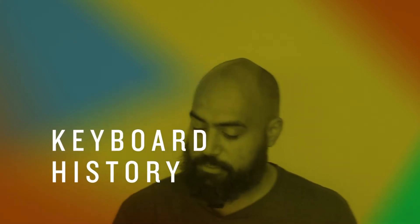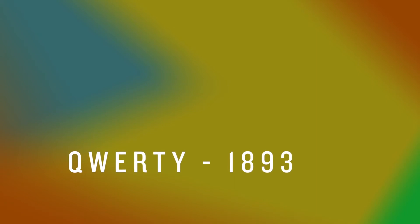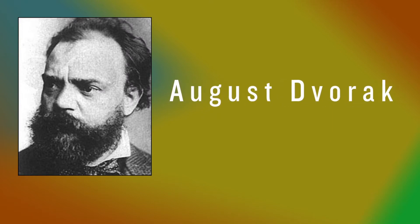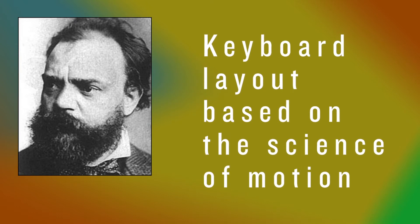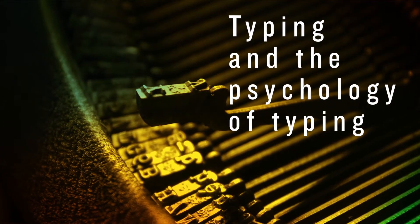In order to first understand the Colemak keyboard layout, we're going to give you a brief history. The most prominently used keyboard layout is QWERTY. QWERTY was developed in 1893 following the brief use of alphabetically ordered keyboard layouts. Fast forward to August Dvorak, who was an educational psychologist at the University of Washington around the 1920s. August and his brother-in-law William Dealey set out to create a keyboard layout based on the science of motion. They studied typing and the psychology of typing first and foremost. Together they developed the Dvorak keyboard layout.